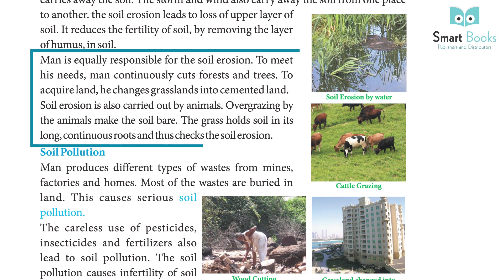Man is equally responsible for soil erosion. To meet his needs, man continuously cuts forests and trees. To acquire land, he changes grasslands into cemented land. Soil erosion is also caused by animals — overgrazing by animals makes the soil bare. The grass holds soil in its long, continuous roots and thus checks soil erosion.